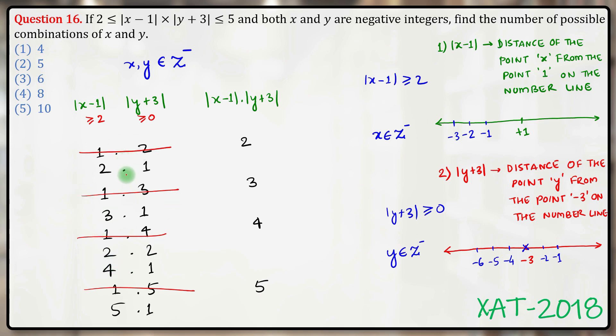Now we'll just have to quickly manually check in all these cases what are the possible values of x and y and if they follow the initial condition of both being negative integers or not. So let's quickly do that check.